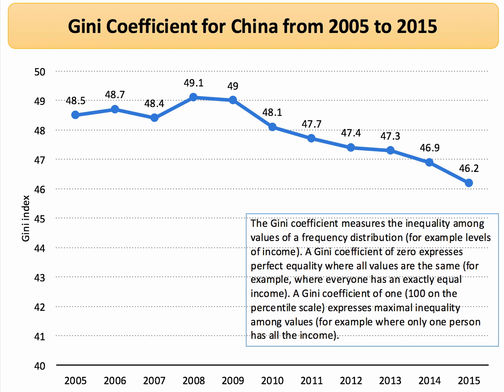In contrast, income inequality in China, according to the official numbers — if we can believe them — has actually been gently falling in the last 10 years or so, albeit from a high level, from 48.5 down to 46.2. So income inequality in China has fallen on this measure.